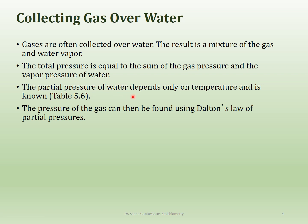The partial pressure of water depends only on the temperature. As the temperature increases, the vaporization of water increases, and so it will exert more pressure. What you have to do is look up a table and find the pressure of water at a certain temperature, and then subtract that from the total pressure.